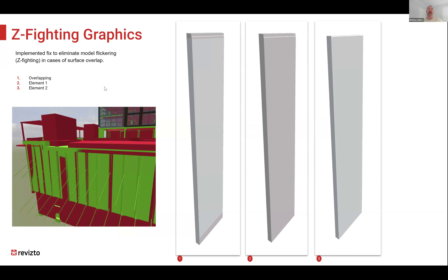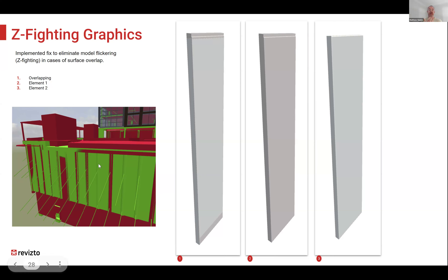Next is Z fighting — an issue where two surfaces fight for supremacy. Think of a structural wall and an architectural wall aligned together in the model creating a flickering effect. Revisto has solved that by eliminating Z fighting, making visual viewing of models nicer. There have been requests to bring it back since some find it useful for validating whether surfaces are aligned, so there's a wishlist ticket to add a toggle switch, but for now Z fighting is gone.